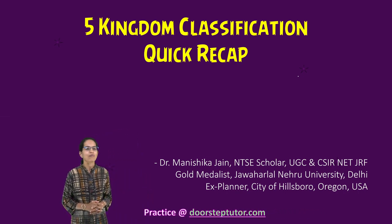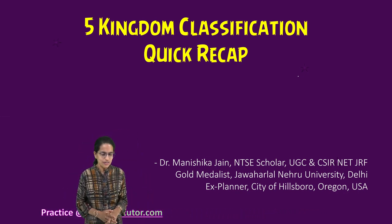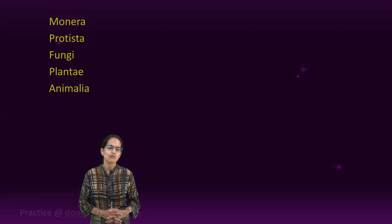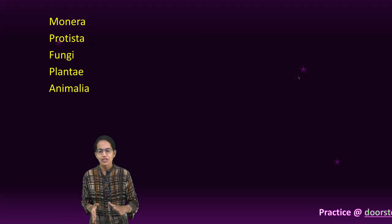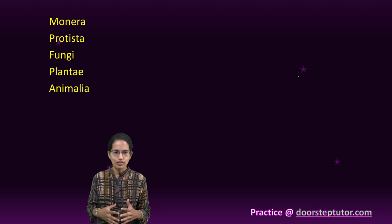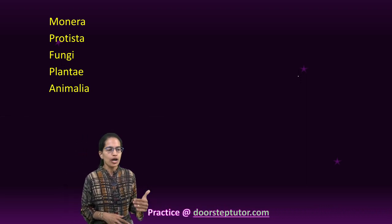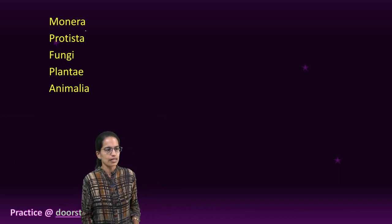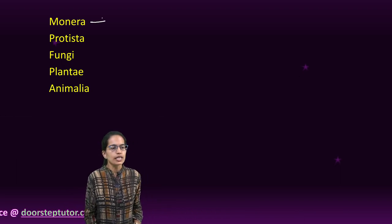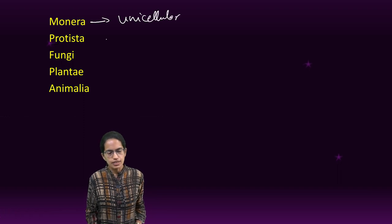Let's do a quick recap of the five kingdom classification, one of the most important and commonly asked topics. The five classification levels are: Monera, Protista, Fungi, Plantae, and Animalia. Monera is unicellular and Protista is also unicellular.